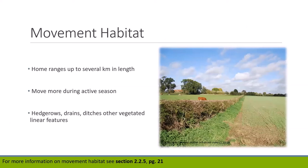Snakes can have home ranges up to several kilometers in length depending on the species. Seasonal movements occur during spring and fall migration between hibernacula and summer habitat, and males travel long distances during the breeding period. Movement corridors include hedgerows, drains, ditches, and other vegetated linear features. Snakes will avoid moving through large areas without sufficient cover. Ways to create movement habitat include making existing hedgerows wider, adding a hedgerow through the middle or along the edge of a field, adding rocks along hedgerows for basking and predator cover, allowing grasses to grow long, and creating buffers around drainage ditches planted with native vegetation and rocks and logs.